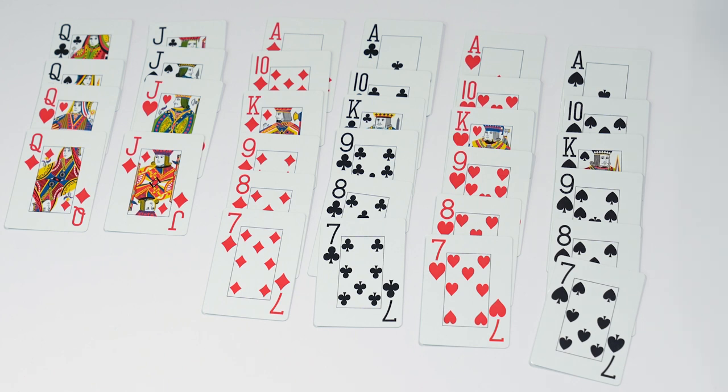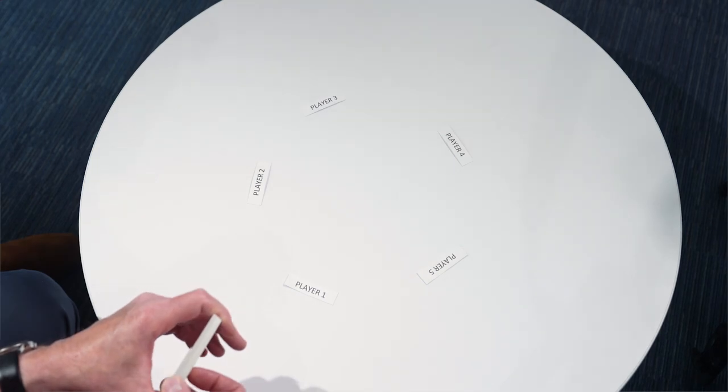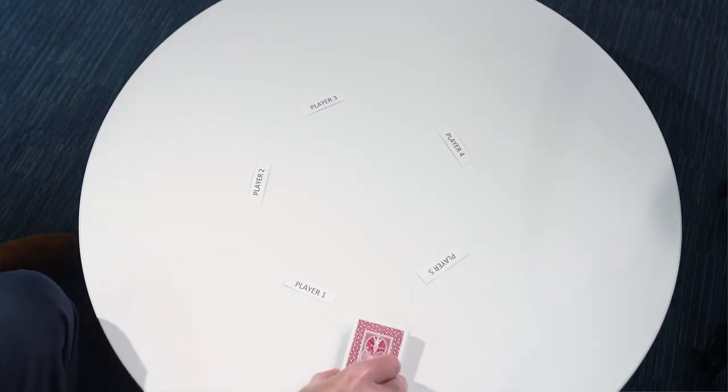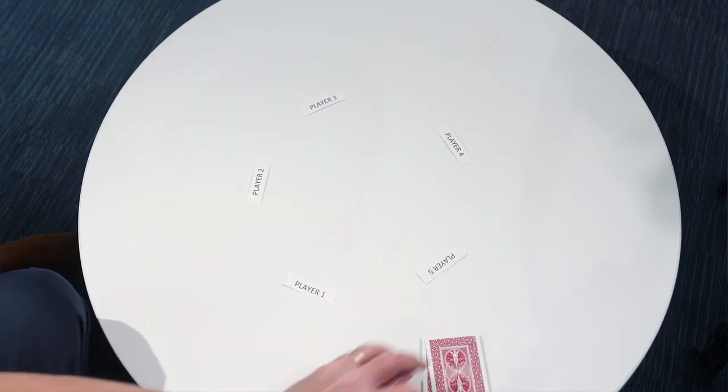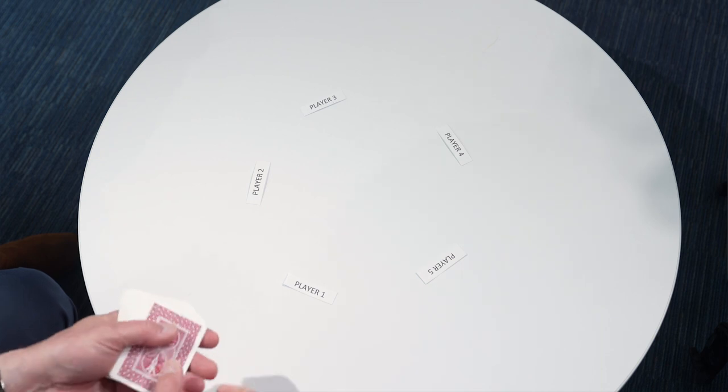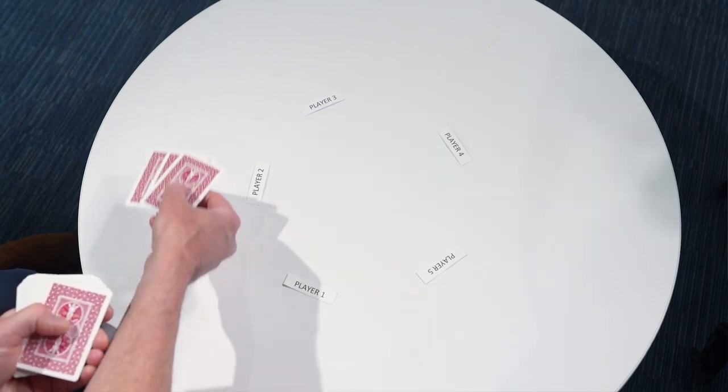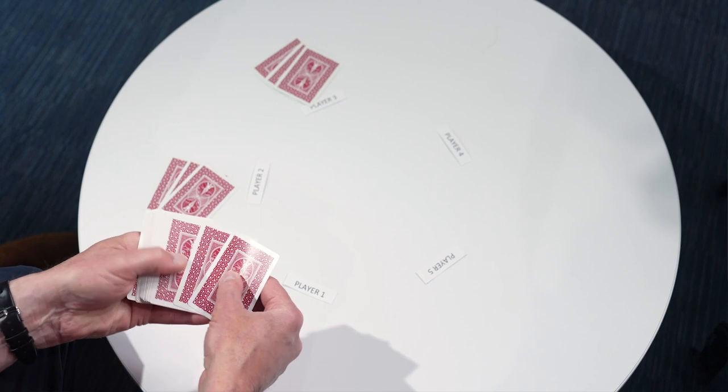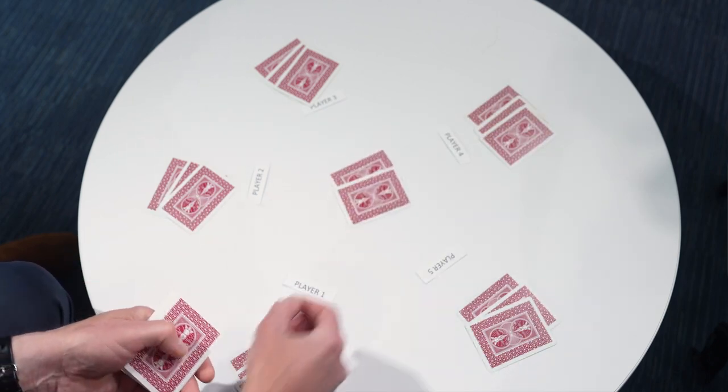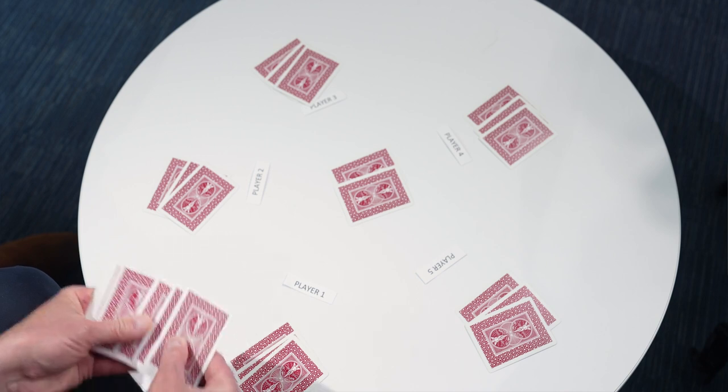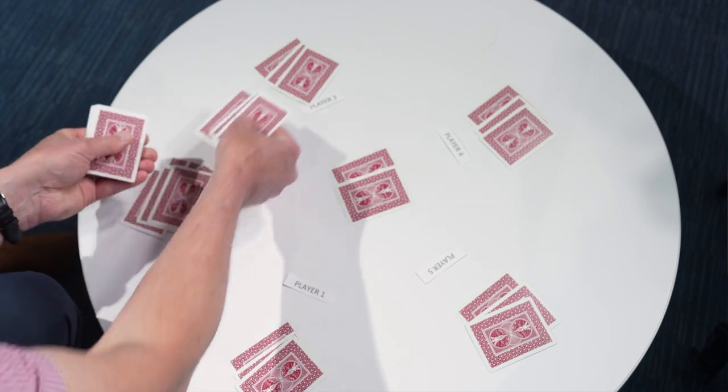Now we'll go to the deal. Dealing cards in Sheepshead is somewhat unique to any other game. The cut is offered to the person to the right of the dealer. The deal then proceeds to the left, but it's dealt 3 cards at a time. 2 cards are then placed in the blind, with the remaining cards dealt out 3 at a time to each player.